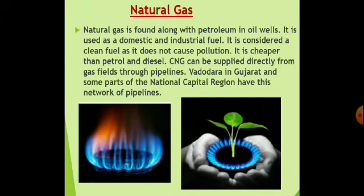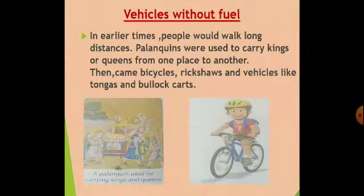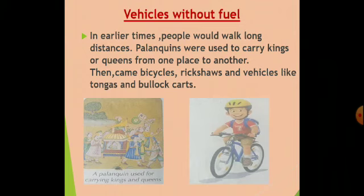The next topic is vehicles without fuel. The meaning of vehicles without fuel is vehicles that do not cause any type of pollution. In earlier times, people would walk long distances. Palanquins were used to carry kings or queens from one place to another. Then came bicycles, rickshaws and vehicles like tongas and bullock carts. Rickshaws were drawn and cycles were ridden by humans to travel short distances. Tongas and bullock carts were drawn by animals to travel longer distances. These types of vehicles do not cause any type of pollution.